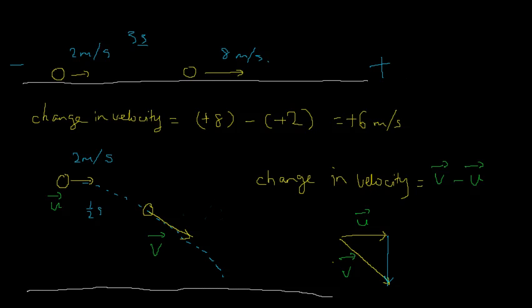Now this seems rather abstract. It's not as obvious as the first example where we simply took the difference between two numbers giving a straightforward increase. In this case, we have a change in two dimensions, and we end up with a vector pointing in a different direction whose length is not simply the difference between the two original lengths.